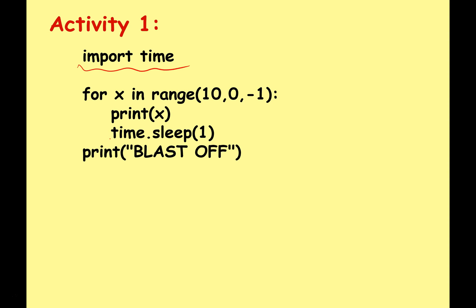Call time dot sleep one and that'll give us a nice pause between each number of the countdown. And at the end we'll print blast off.